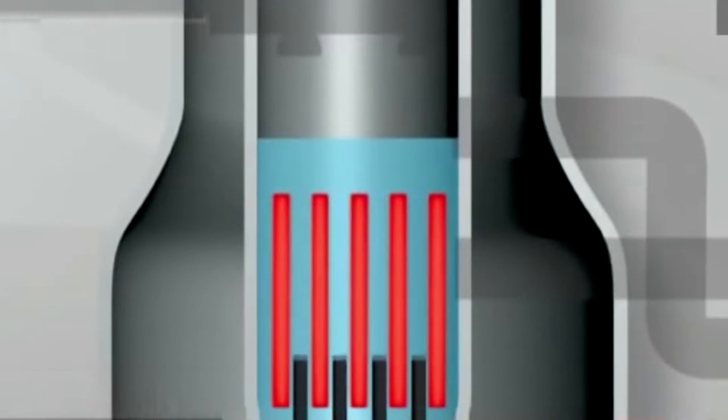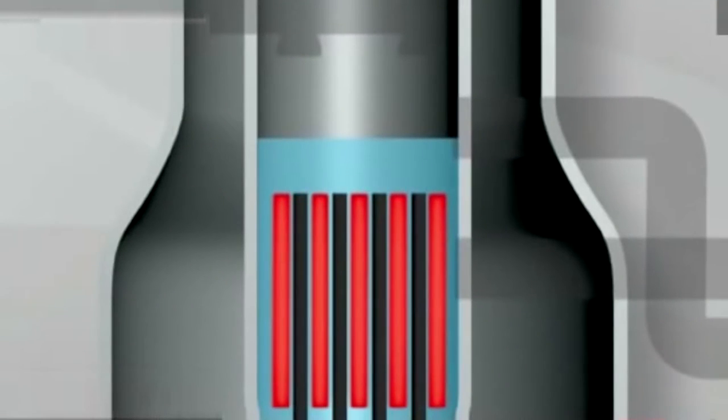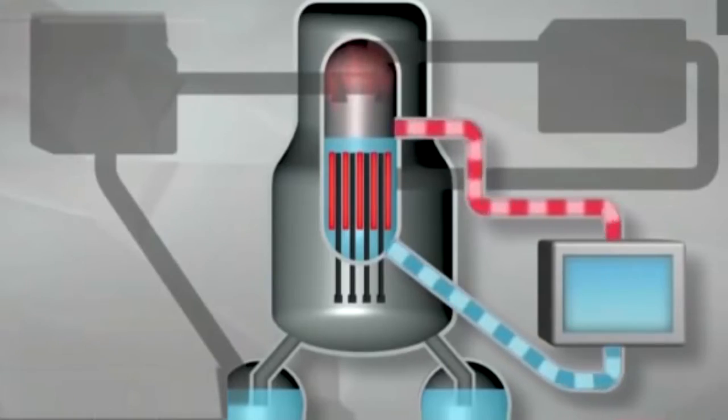But nuclear fuel rods generate intense heat even after a shutdown. Backup generators kicked in to power the cooling systems and stop the fuel rods from melting. When you turn a reactor off, fission stops, but you have this decay heat that you have to manage.